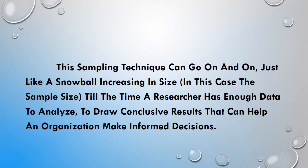This sampling can go on and on, just like a snowball increasing in size. It starts with one person, who introduces another two. Those two introduce another four each, and so on. This snowball keeps increasing in size until the researcher has enough data, at which point they will discontinue the process.